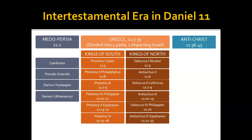He refers here to the abomination of desolation — something that the Lord Jesus will refer to in his prophetic discourses in the New Testament. Even though this section of Daniel chapter 11 was fulfilled by Antiochus Epiphanes before the time of Christ, the Lord Jesus is still looking forward to a future time when there will be another abomination of desolation in the holy place, and he speaks about that in Matthew chapter 24.